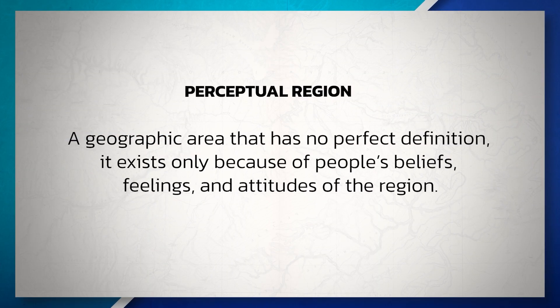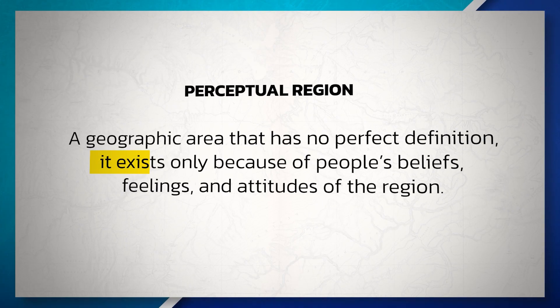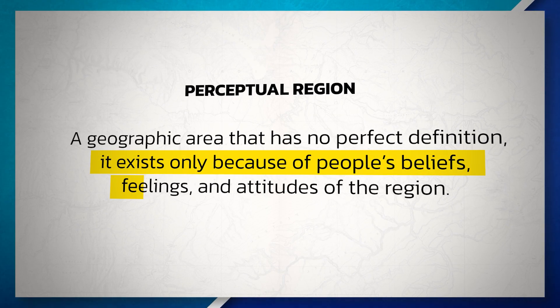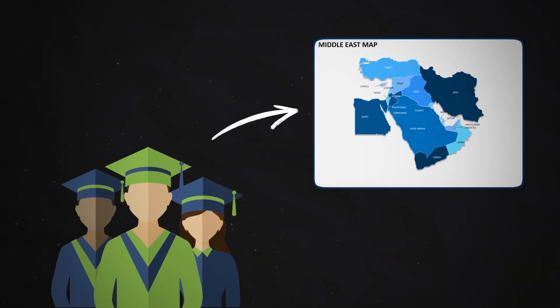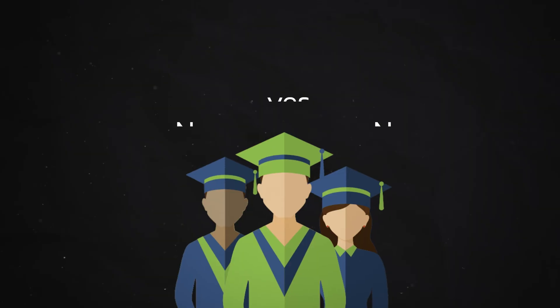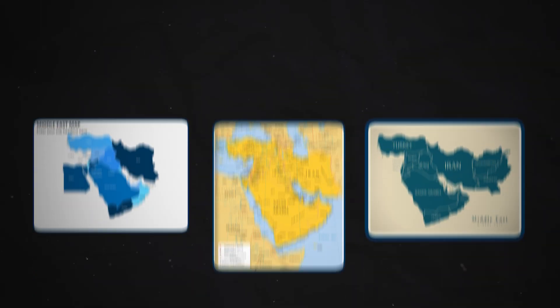The last type of region is a perceptual region, which is a geographic area that has no perfect definition. It only exists because of people's beliefs, feelings, and attitudes of the region. These regions are often in a person's mind, which makes it hard to have set boundaries. For example, which countries are part of the Middle East? If you asked your classmates, you would find some similar answers, but everyone would likely have different ideas for what countries are included. So we can see that regions can differ depending on the place or topic we are looking at.